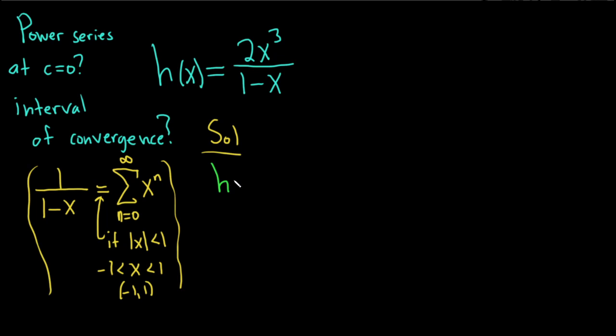So we have h of x equals. And let's go ahead and take the 2x cubed and factor it out. We can write it like this: 2x cubed times 1 over 1 minus x.